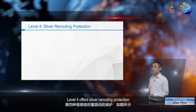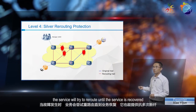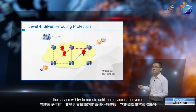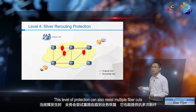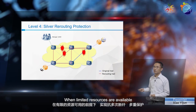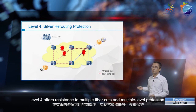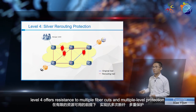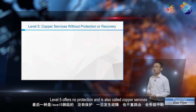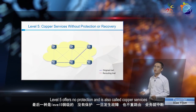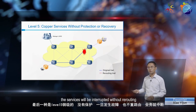Level 4 offers silver rerouting protection. As shown in the figure, when a fault occurs, the service will try to reroute until the service is recovered. This level of protection can also resist multiple fiber cuts. When limited resources are available, Level 4 offers resistance to multiple fiber cuts and multiple level protection, but the fault recovery time varies. Level 5 offers no protection and is also called copper services. Once a fault occurs, the services will be interrupted without rerouting.